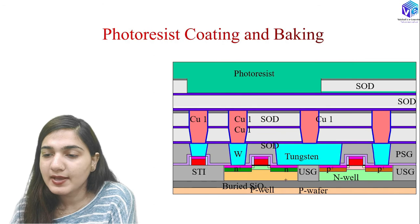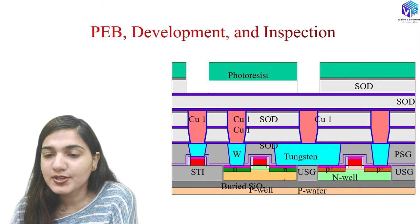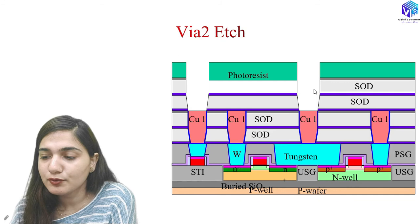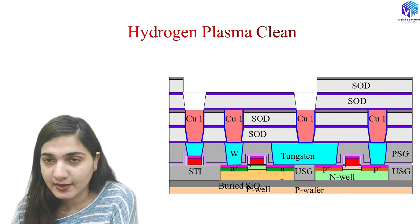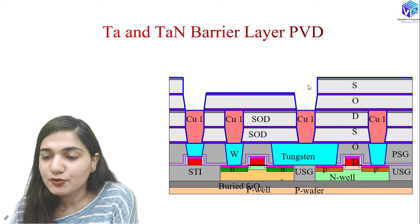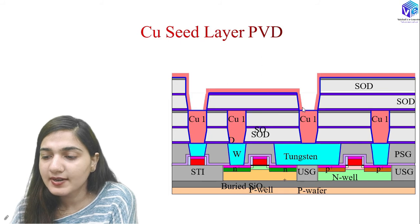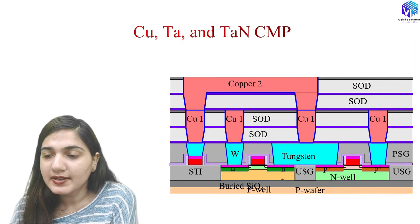Photoresist coating, baking, and the wire-2 mask are used for alignment, exposure, PEB development, and inspection. Wire-2 holes are formed by etching. After stripping the photoresist, hydrogen plasma cleaning is performed. Tantalum and tantalum nitride barrier layer PVD, copper seed layer PVD, bulk copper ECP, copper annealing, and copper/tantalum/tantalum nitride CMP complete the second copper interconnect layer.